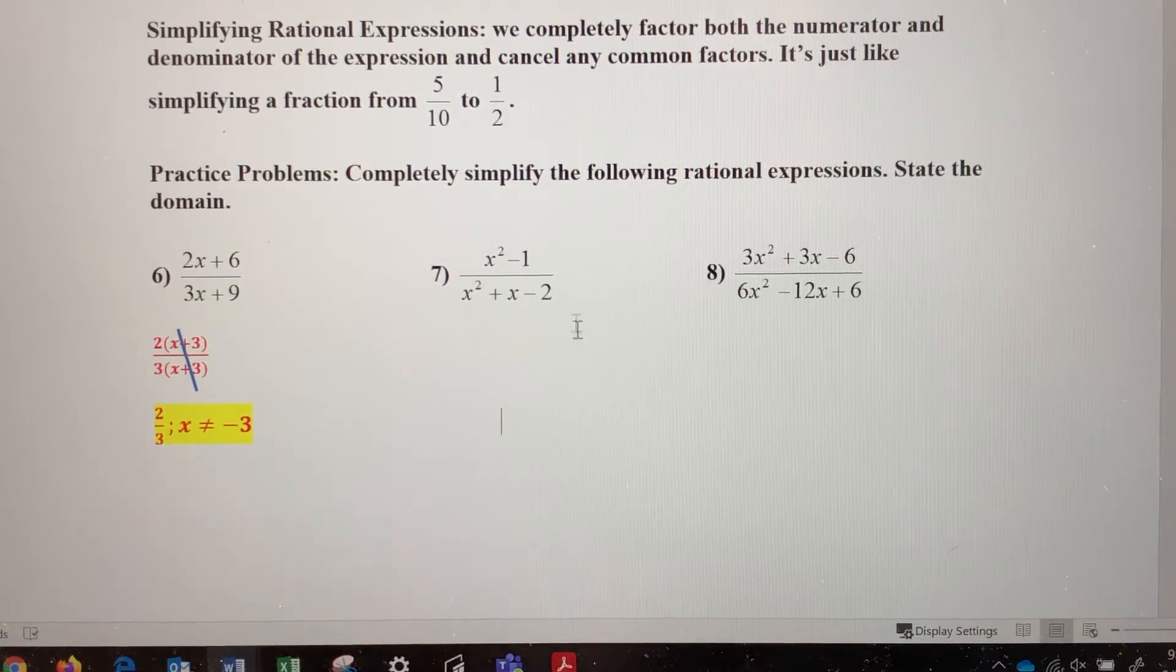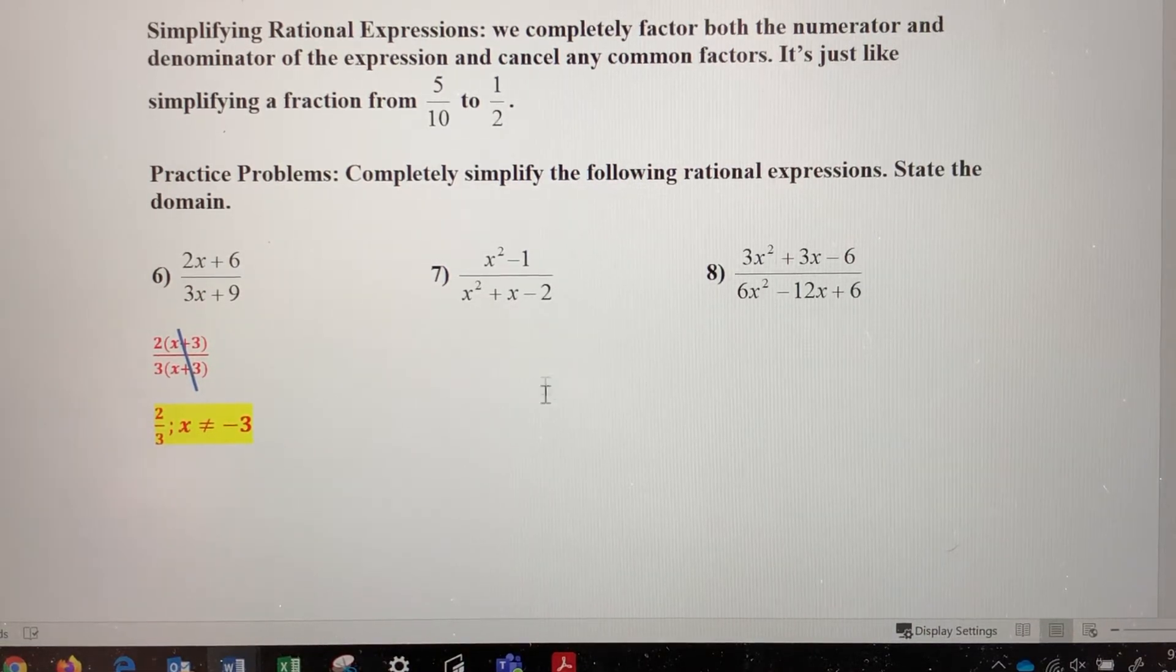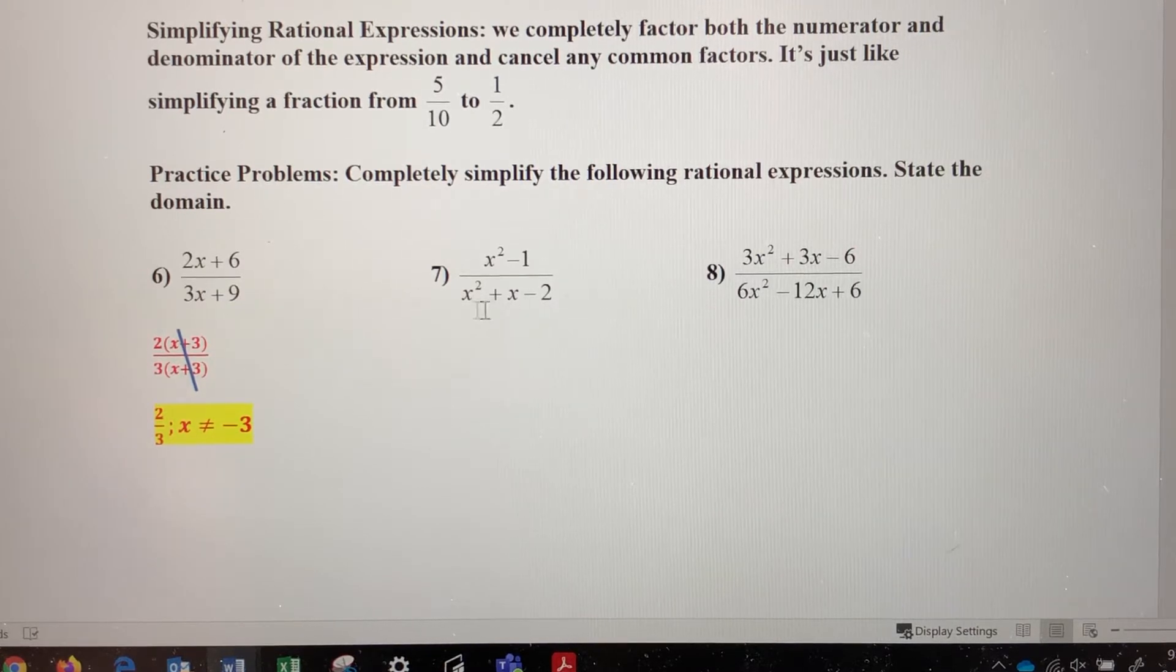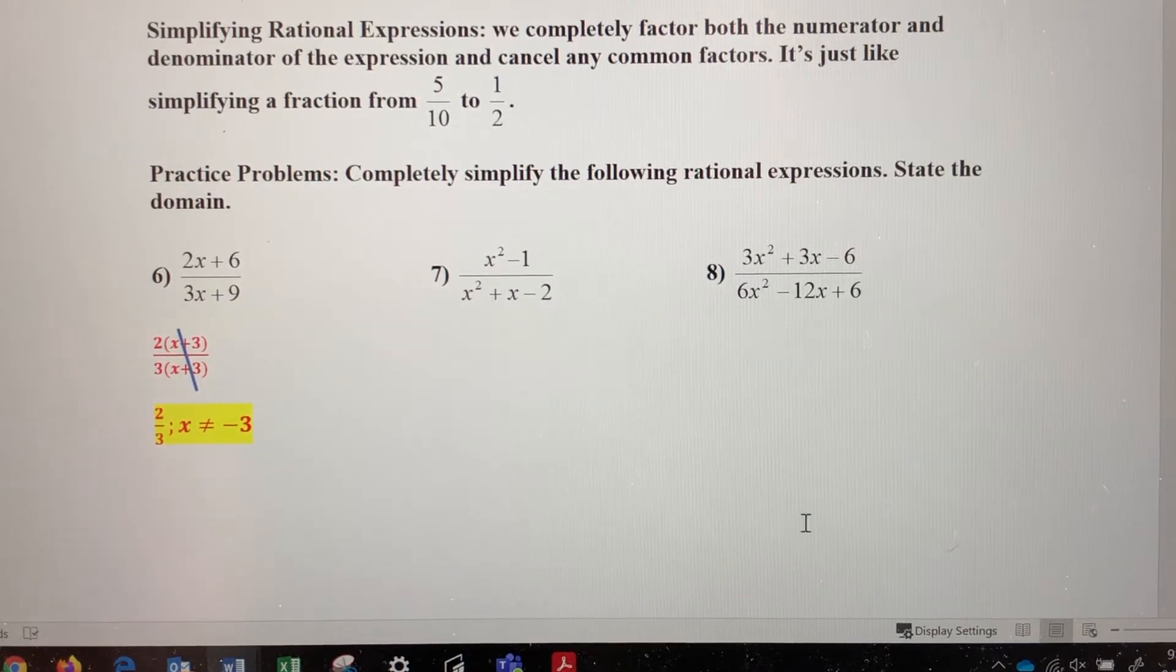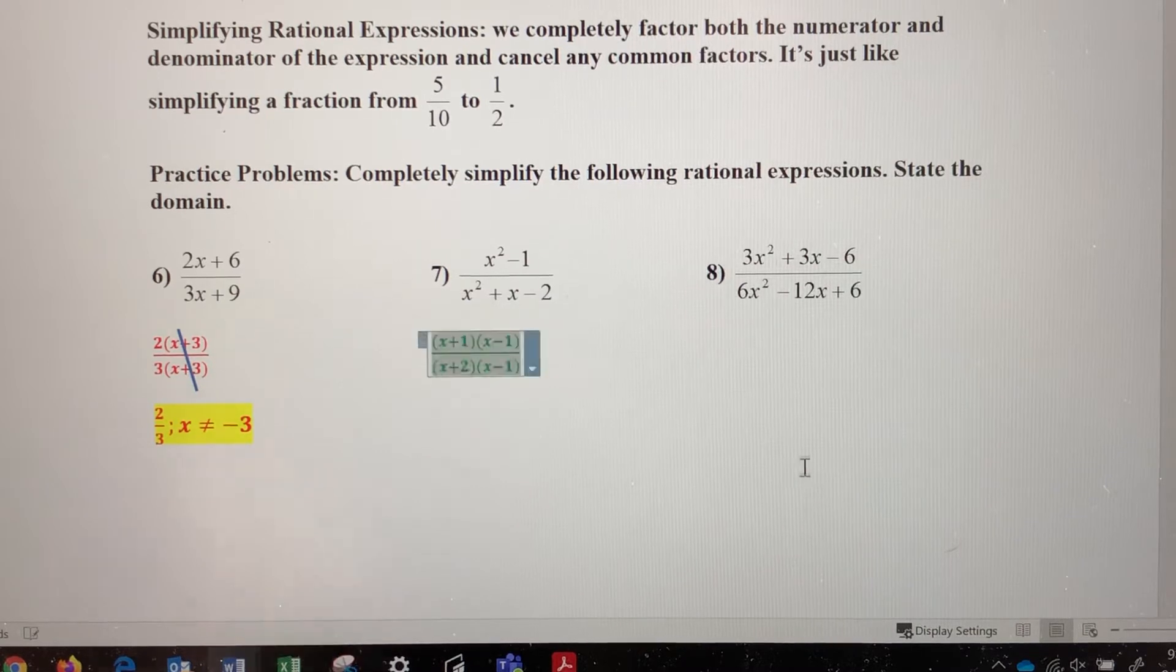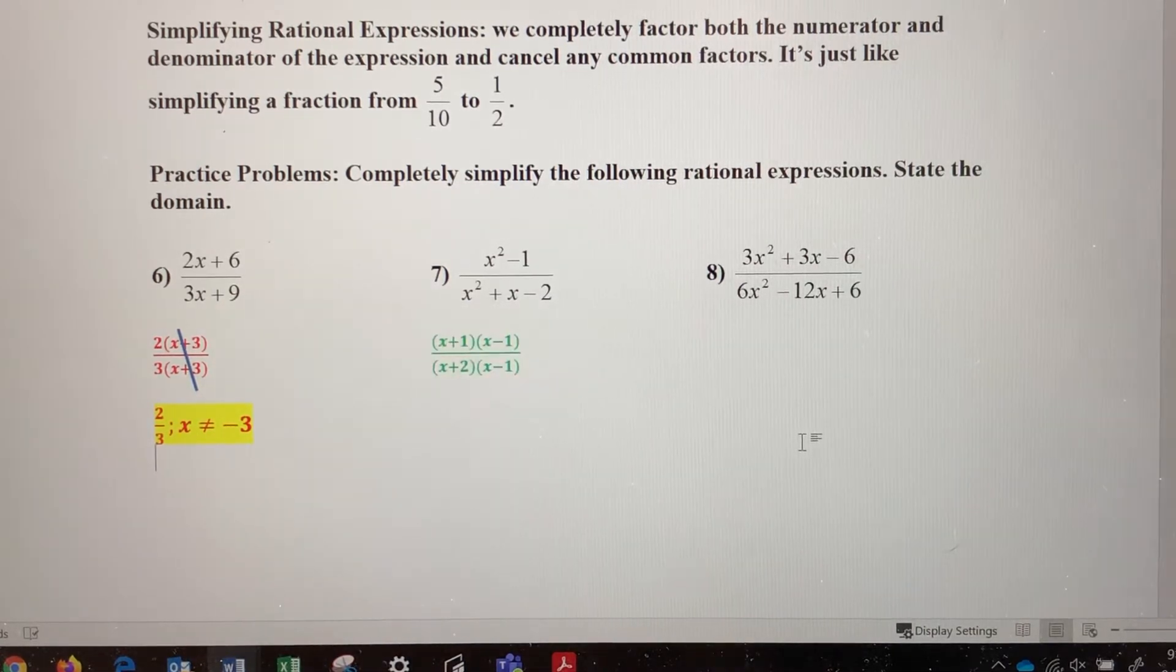Number 7. We want to factor the numerator. That's difference of squares. We want to factor the denominator. That's a quadratic trinomial that can be factored. So when I factor both numerator and denominator, I get x plus 1, x minus 1, over x plus 2, x minus 1.